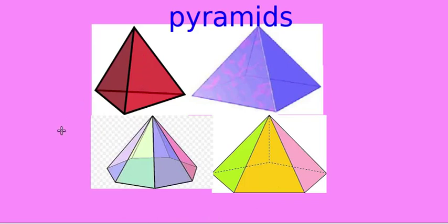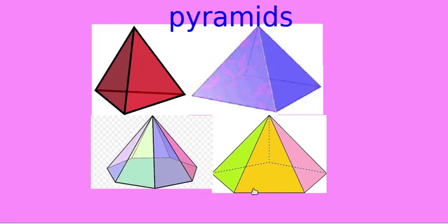Why is it called a triangular pyramid? It is called so because the base is a triangle. Here the base is a square, therefore it is called a square pyramid. For the pentagonal pyramid, the base is a pentagon. And for the hexagonal pyramid, the base is hexagonal.